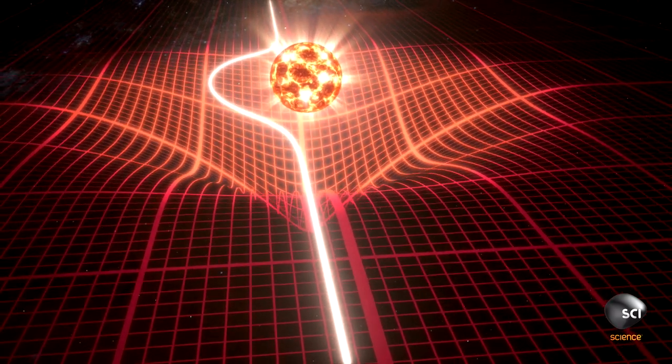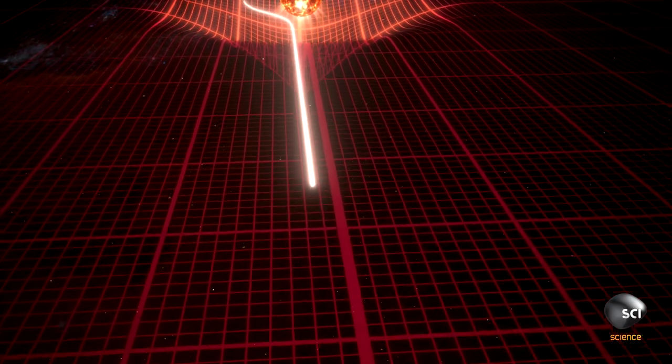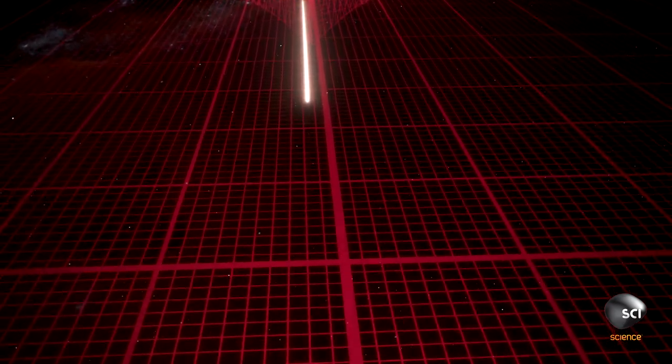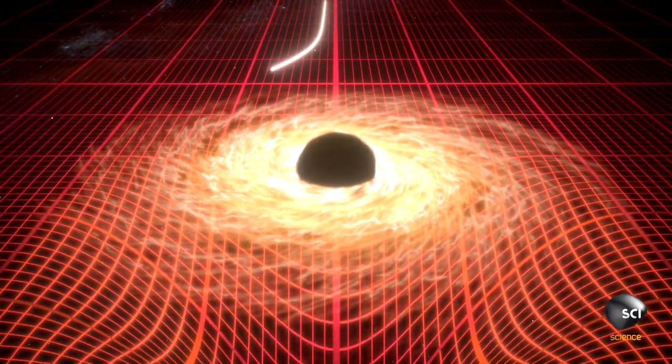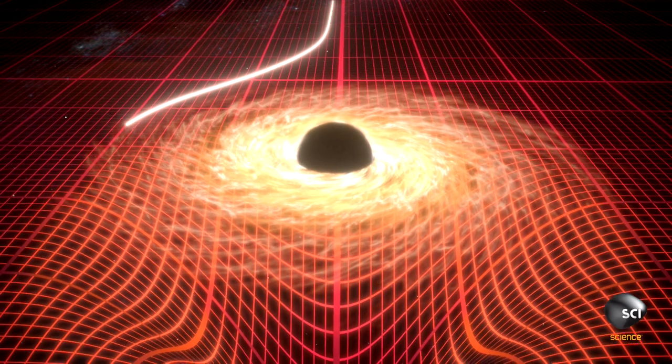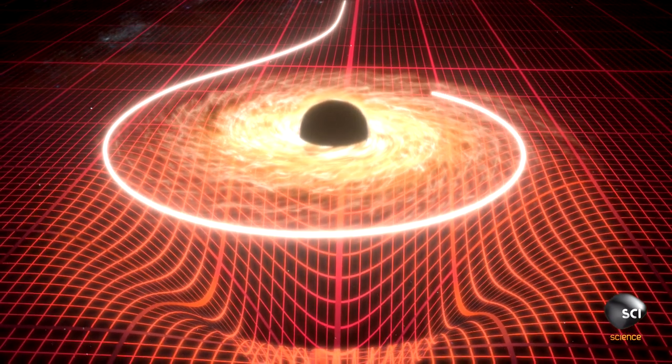The light bends, not because the light bends, but the space in which the light is traveling curves itself. This is why our probe's trajectory is curving. The black hole's gravity is warping the fabric of space. Everything that travels through this curved space must follow a curved path, including light.